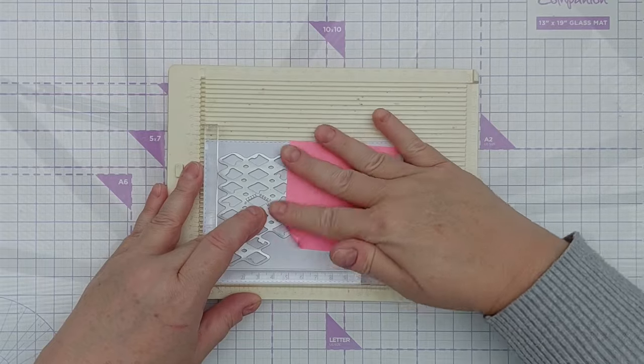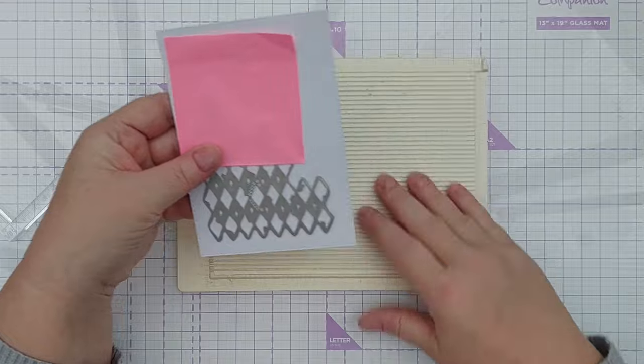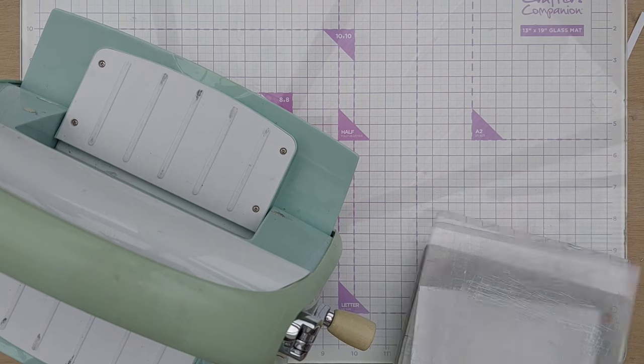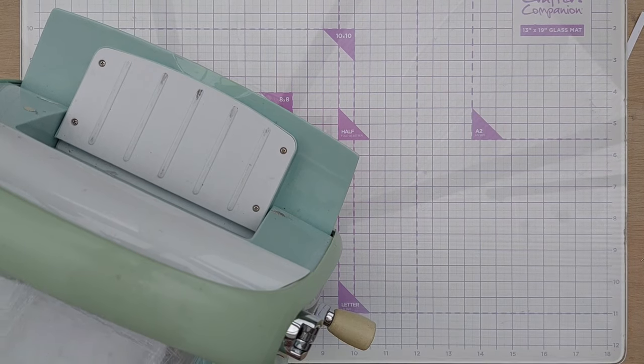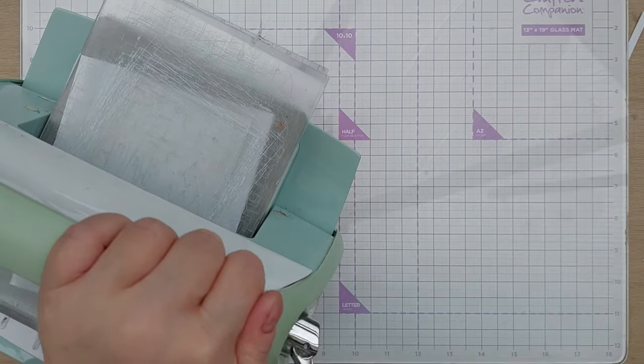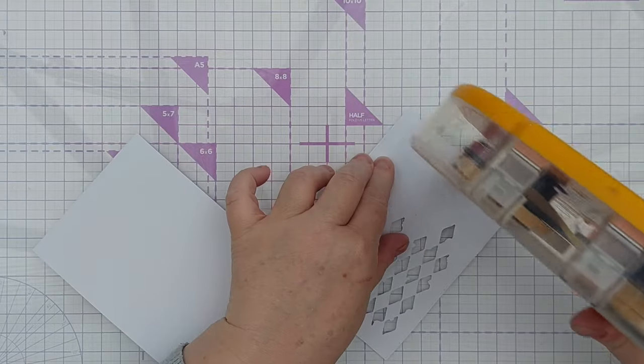I then held the die in place with a sticky note and ran it through my Cuttlebug die cutting machine. To protect the card panel from the scratches in my cutting plate, I added a piece of card between the panel and the bottom cutting plate. Next, I added tape runner to the back of the panel with the aperture in.